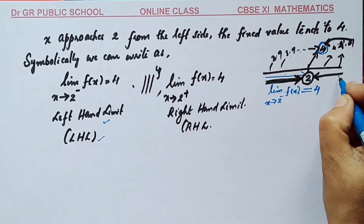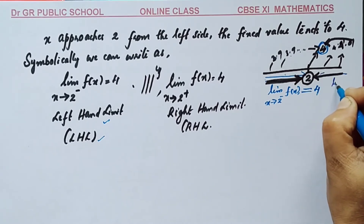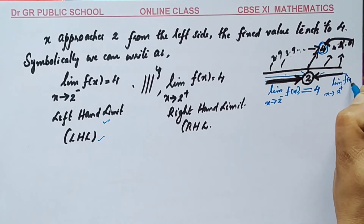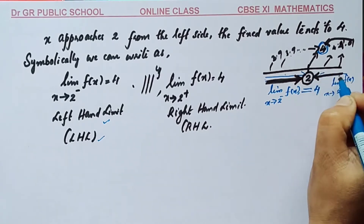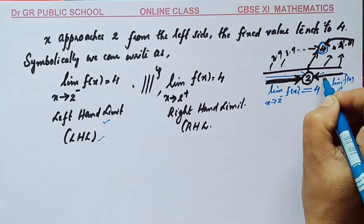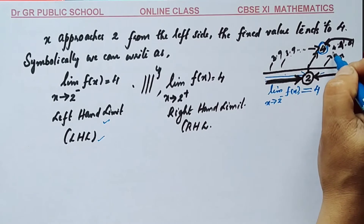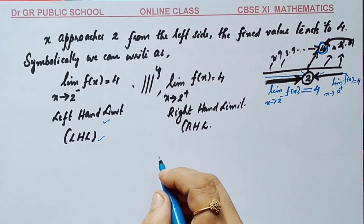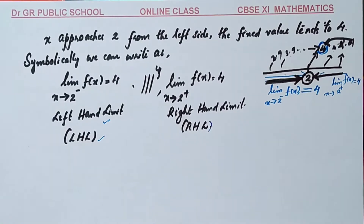Similarly, when approaching 2 from the right side, we write limit x tends to 2 plus of f(x). The function returns 4.01, 4.001, and so on, approximately equal to 4. This is called the right-hand limit of a function.